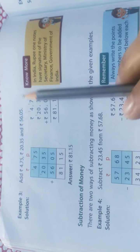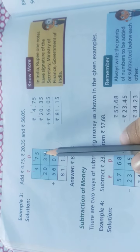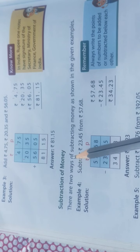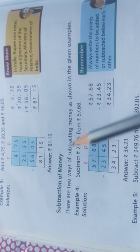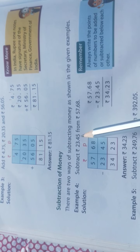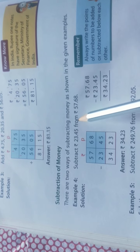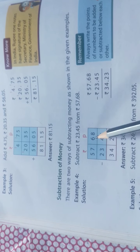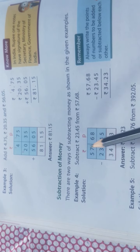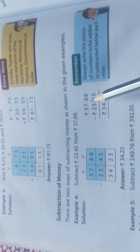Now, subtraction of money: there are two ways of subtracting money as shown in the given example. Subtract 23 rupees 45 paise from 57 rupees 68 paise — you are subtracting 57 by 23, not 23 by 57. So you write 57 rupees 68 paise minus 23 rupees 45 paise and subtract by making a box and columns, or subtract straight away using the decimal point method.